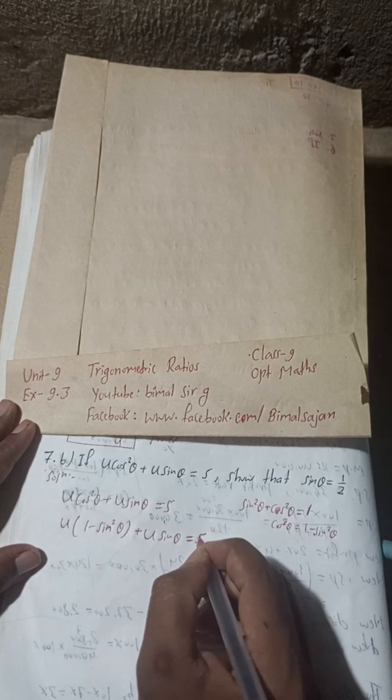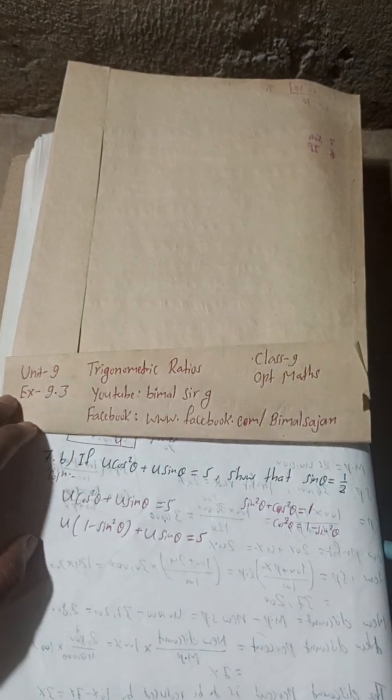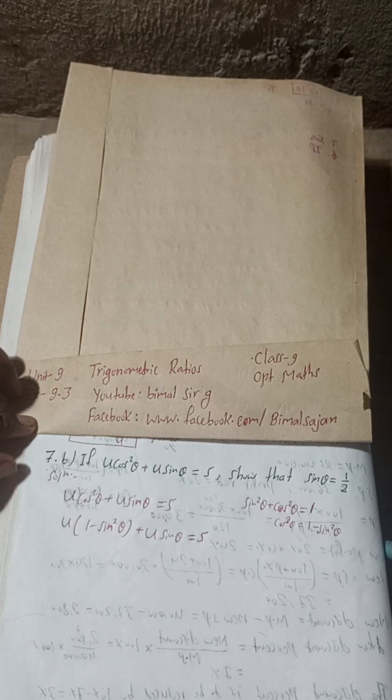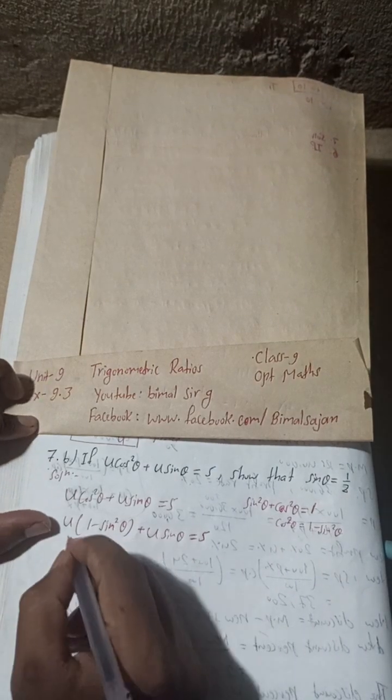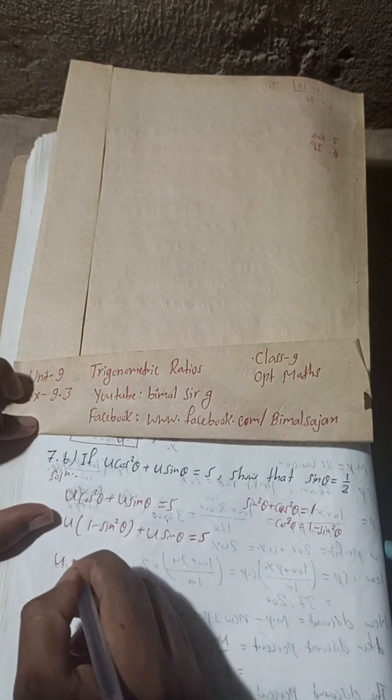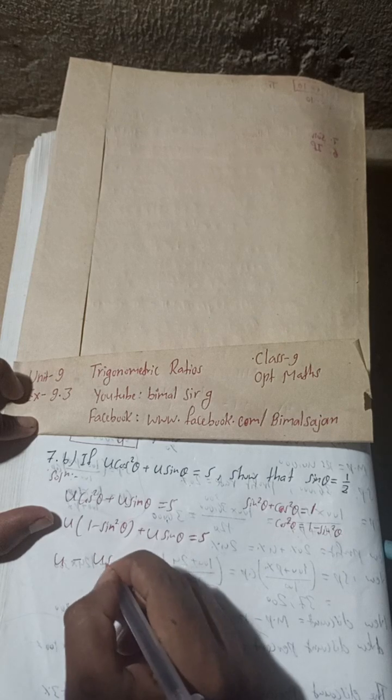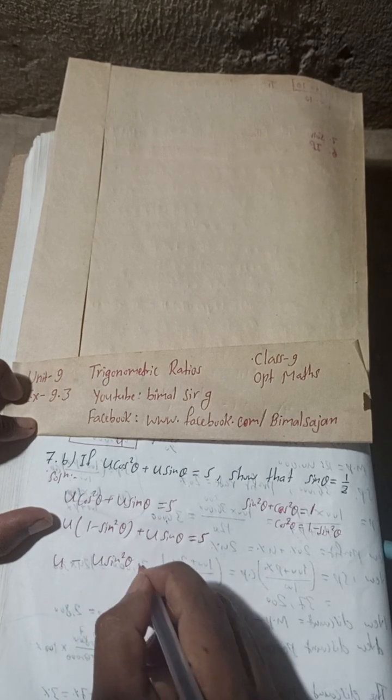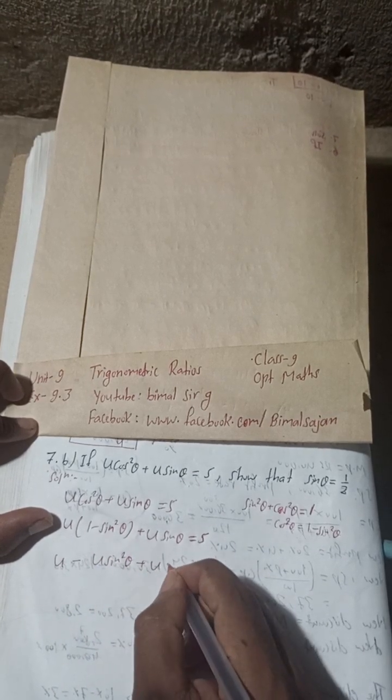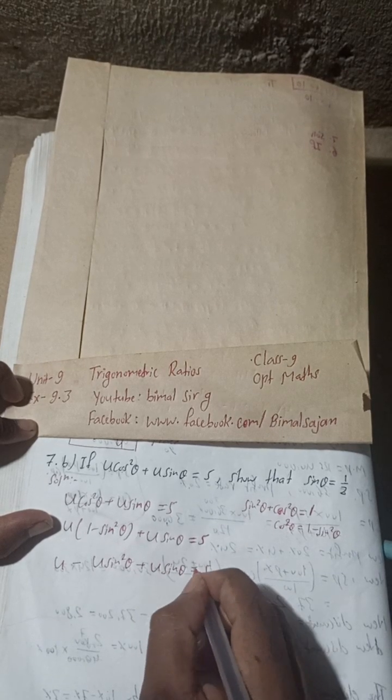My writing is not good, but you can listen to the audio and follow what I am writing. Now this is 4, so: 4 - 4sin²θ + 4sinθ = 5.